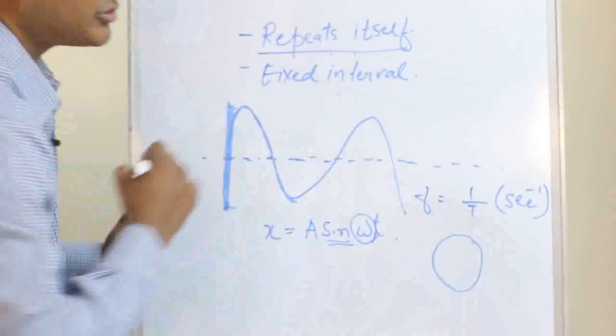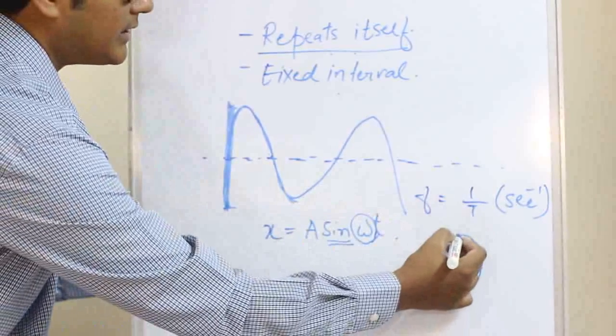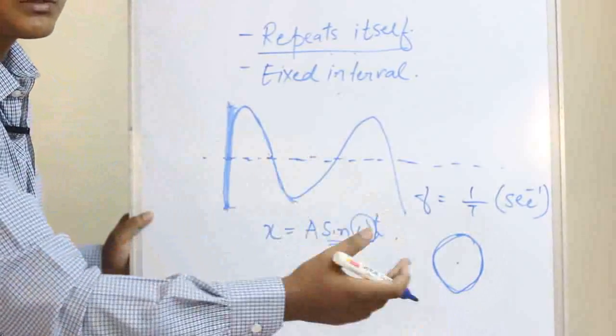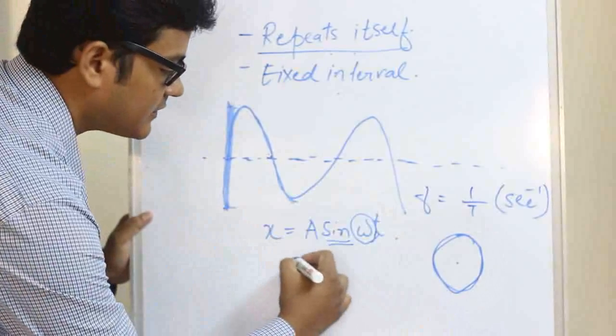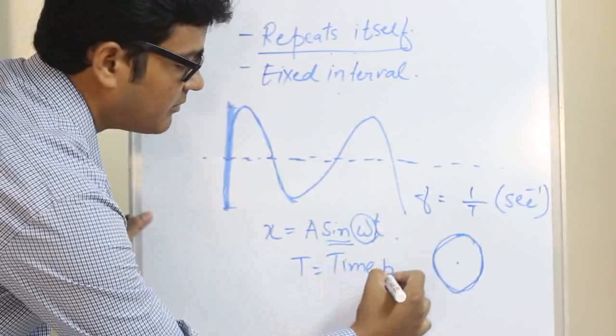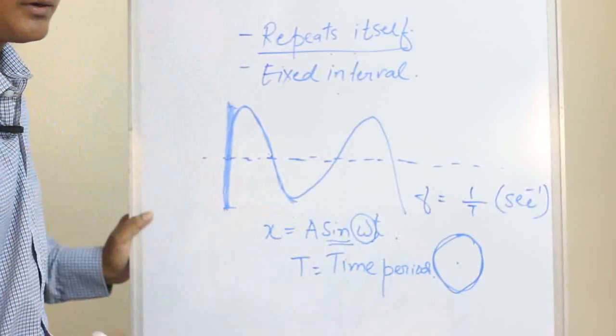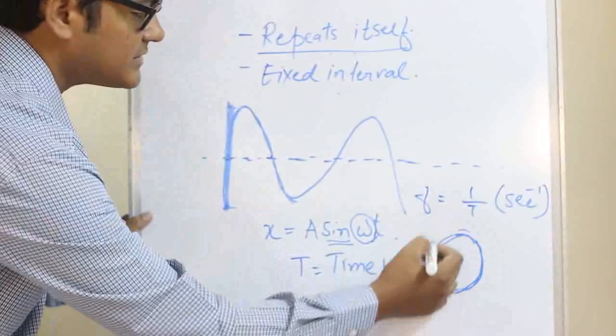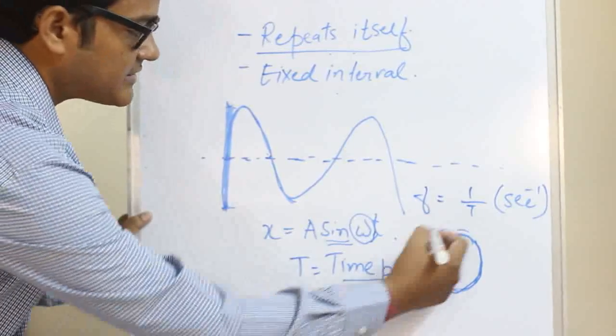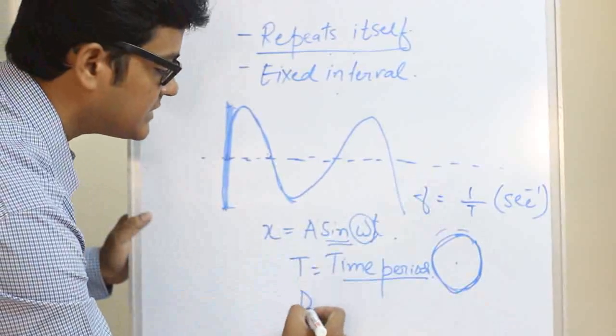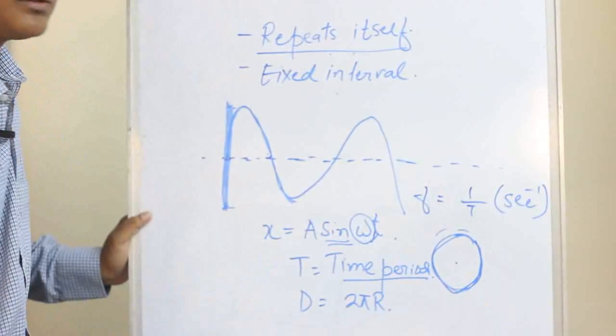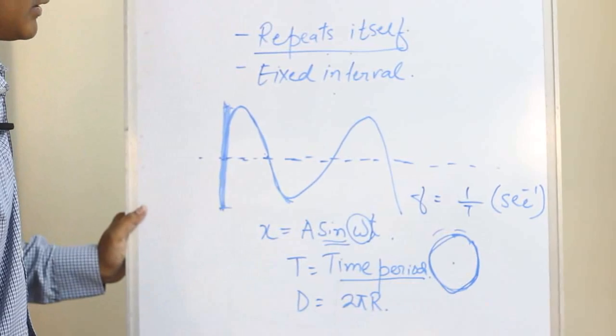Now if we take the example of a circular motion, the body covers the whole distance in a fixed interval of time. Let's say that fixed interval of time is called a time period. Now how much distance does this body cover while it is covering the time period? Its circumference. So what is the distance that it is covering? 2πR, R being the radius of the circle.